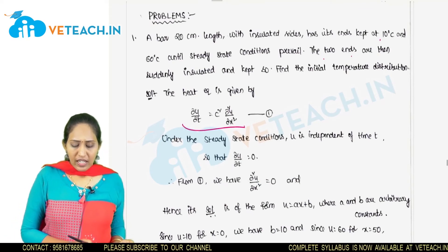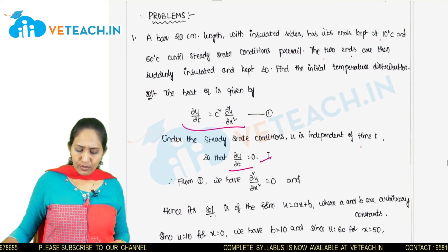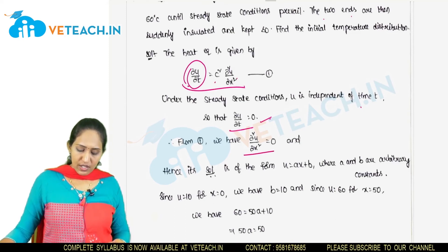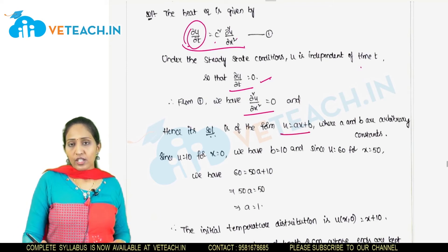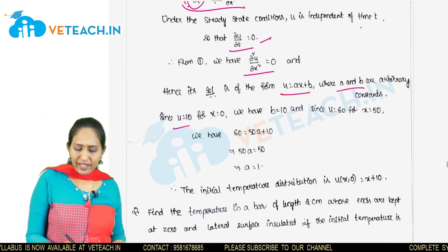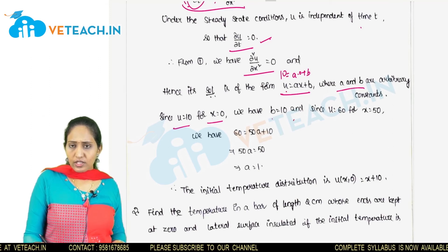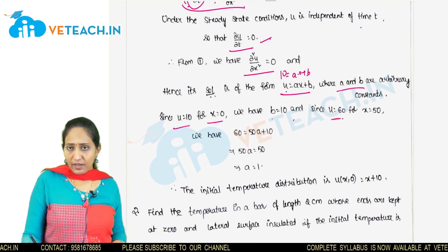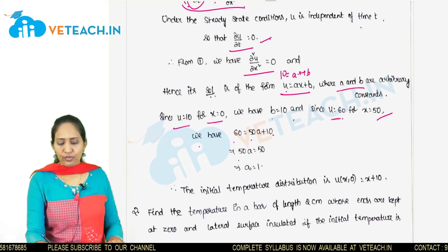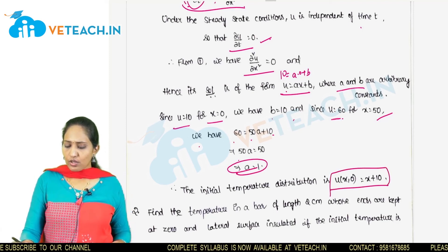Under steady state conditions, u is independent of time t, so ∂u/∂t = 0, and from the heat equation, ∂²u/∂x² = 0. Its solution has the form u = Ax + B, where A and B are arbitrary constants. Applying u = 10 when x = 0 gives B = 10. Applying u = 60 when x = 20 gives 60 = 50A + 10, so A = 1. Therefore, the initial temperature distribution is u(x, 0) = x + 10.